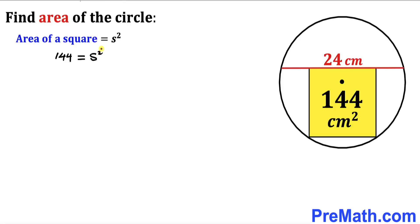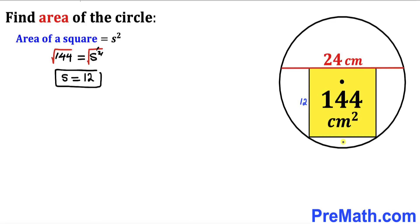Taking a square root on both sides — square and square root undo each other — so our side length of this square turns out to be positive 12 centimeter. Therefore this side length of this square is 12, this is 12, and this is 12 across the board.